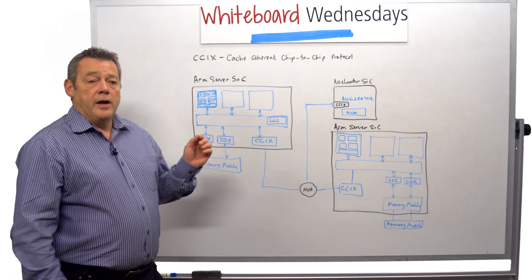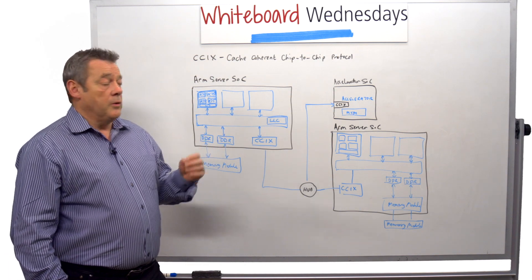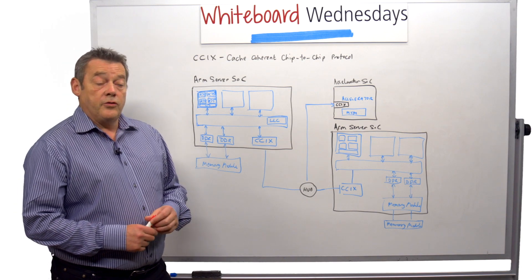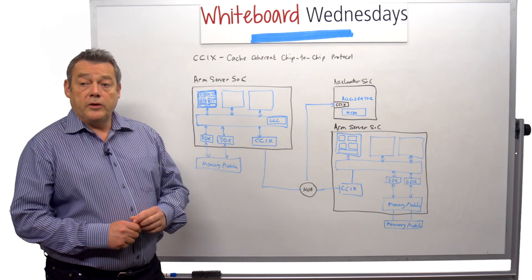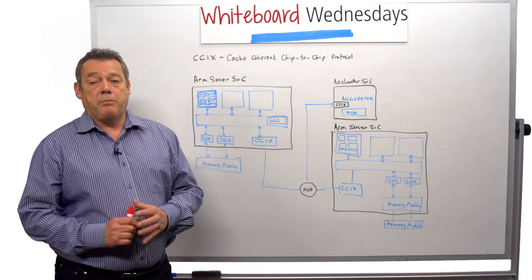Today I want to talk about a new protocol that's been announced and is being worked on by Cadence and a number of partners. It's called CCIX, a cache coherent chip-to-chip protocol.